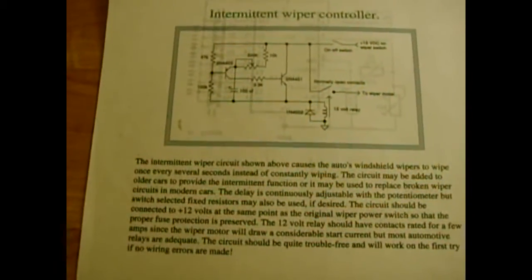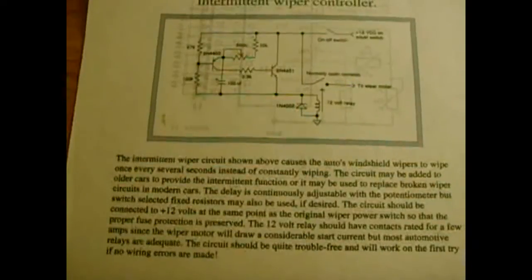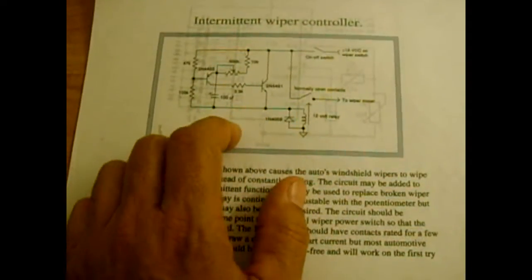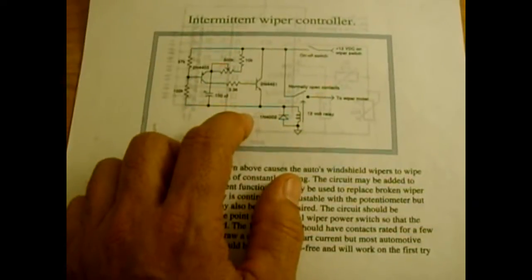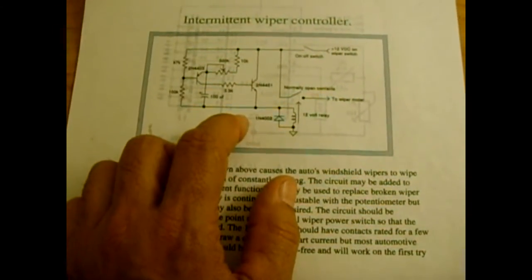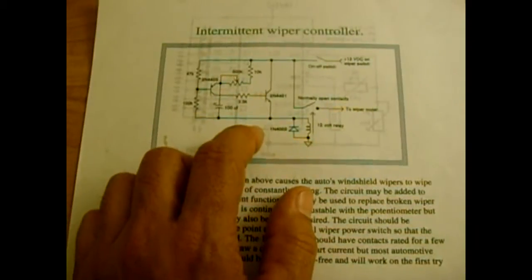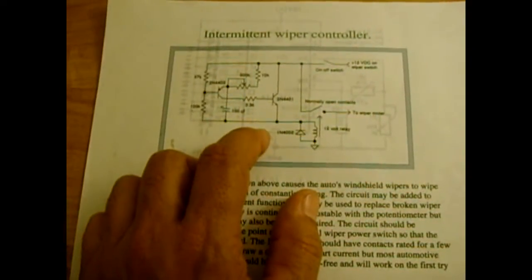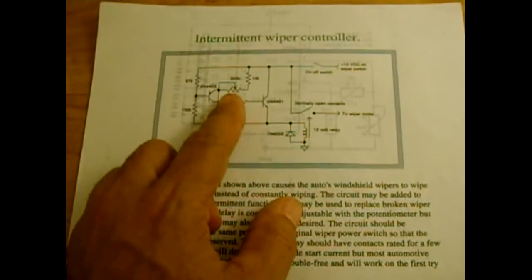In this video you will learn how you can make an intermittent wiper controller, which is a very useful circuit. If you have a vehicle that does not have an intermittent wiper and you'd like to have one, or you have a vehicle that has an intermittent wiper that no longer works properly, you can replace the circuit with this one here.